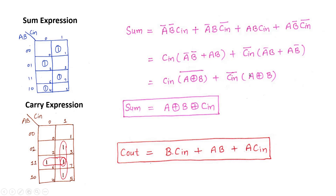C-in times (A-bar B-bar plus A B) is an XNOR gate expression, and C-in-bar times (A-bar B plus A B-bar) — (A-bar B plus A B-bar) is the expression of an XOR gate, which is A XOR B. So if we consider A XOR B as a single term, this becomes C-in-bar times (A XOR B)-bar plus C-in times (A XOR B), which is nothing but an XOR expression. The final sum expression becomes A XOR B XOR C-in.